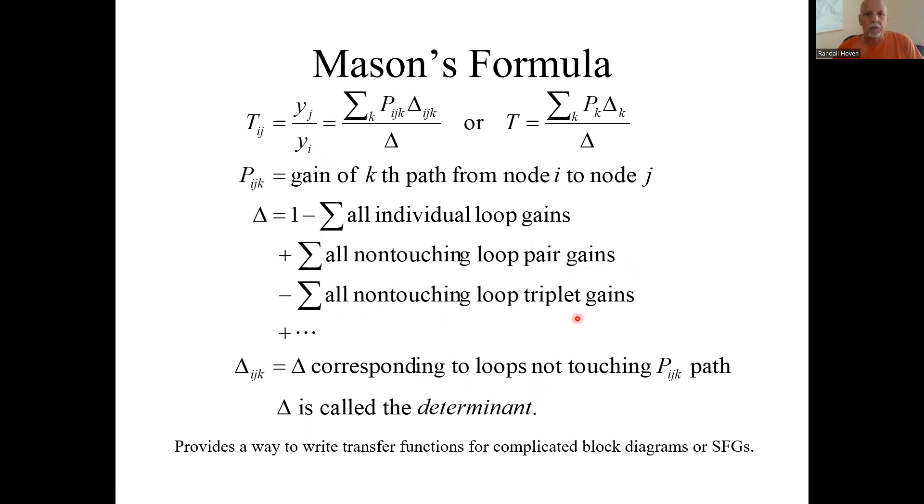And then if you have three loops that don't touch each other, none of which touch each other, then you do the triplet gains. And each time you change the sign: minus, plus, minus, plus. We're never going to get to quadruple loops, and we'll rarely even do triplets. Most you usually get are pairs.